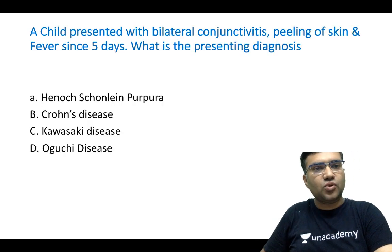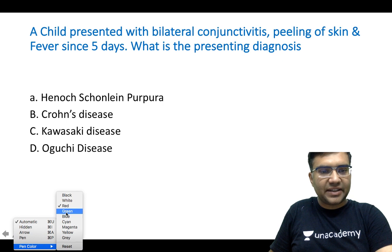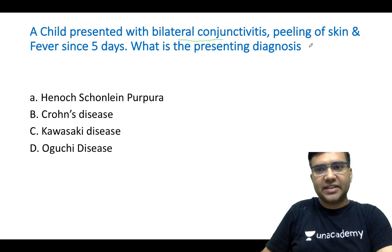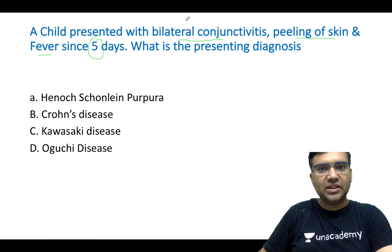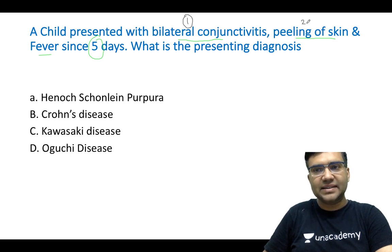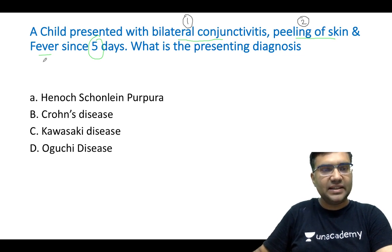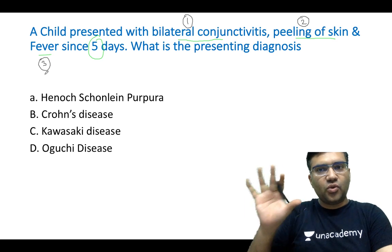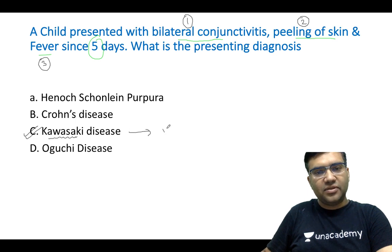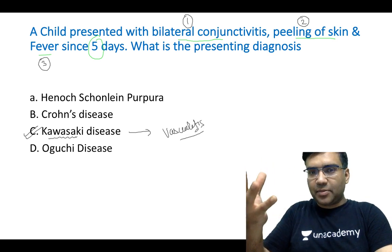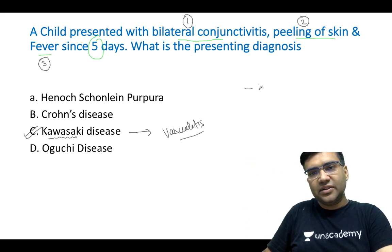The first question: a child presented with bilateral conjunctivitis, peeling of skin, and fever since the last five days. What is the presenting diagnosis? Whenever you get these types of questions, look at the hints: bilateral conjunctivitis, peeling of skin, and fever. The possible diagnosis here is Kawasaki disease, which is a type of vasculitis with presentation usually in the first decade of life.